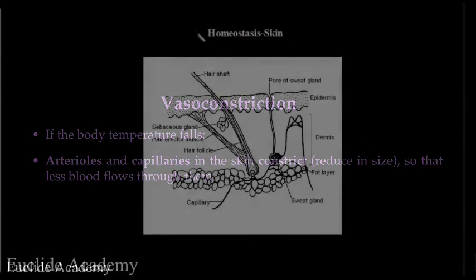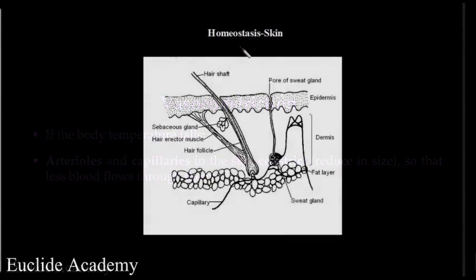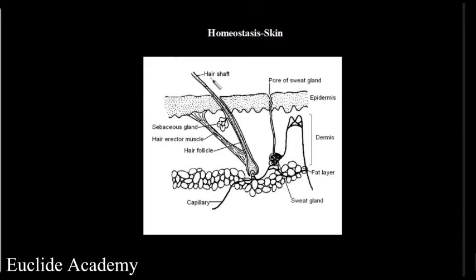Now let's zoom in and look at the skin and its parts, and how they are important for homeostasis. Looking at the skin diagram, the top part is what we call the epidermis, which has a keratinized layer made of flat dead cells. The epidermis also contains melanin. We also have the pores — the small openings you can see on top of your skin — these are called the pores of the sweat gland.